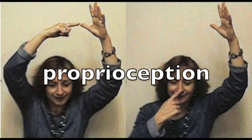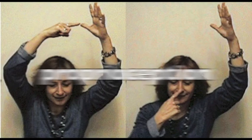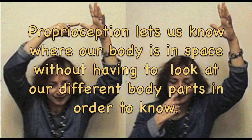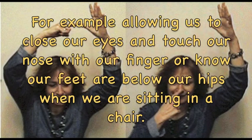Proprioception is another internal sense. Proprioception lets us know where our body is in space without having to look at our different body parts in order to know. For example, allowing us to close our eyes and touch our nose with our finger, or know our feet are below our hips when we are sitting in a chair.